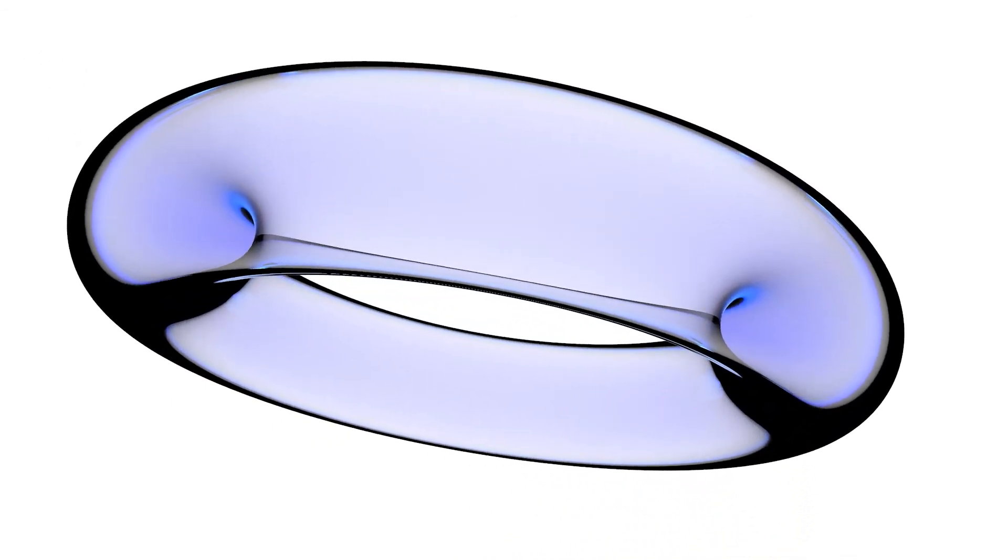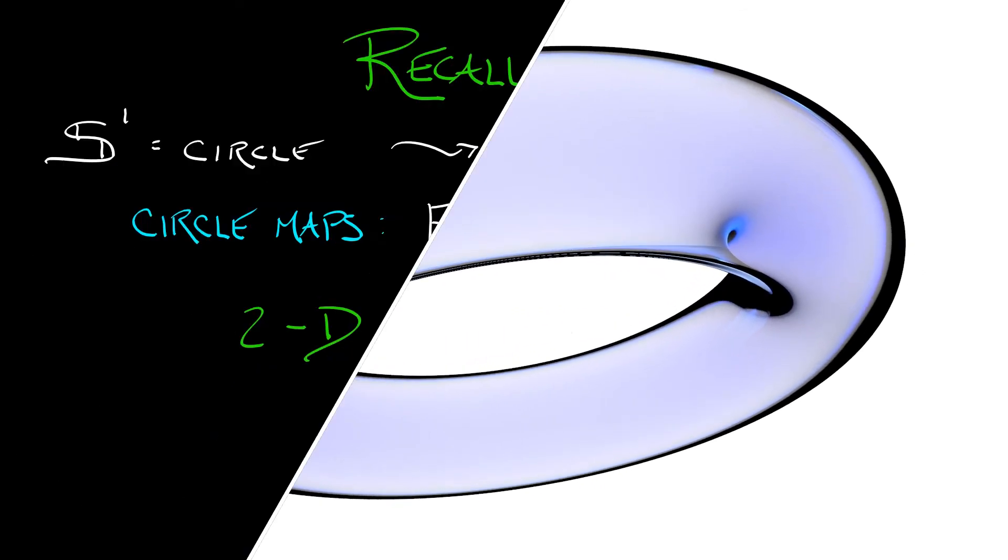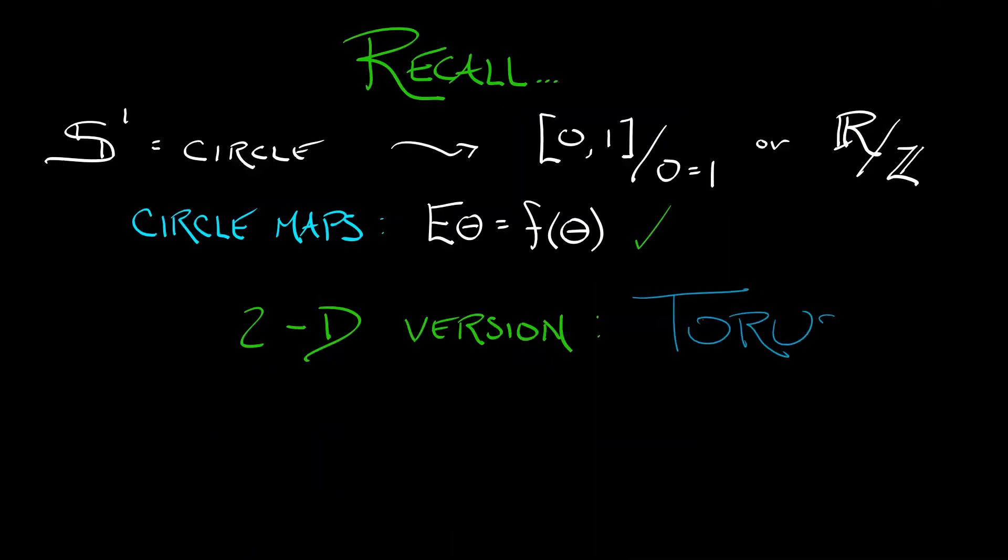Now mathematically, what a torus is, well, it can, just like a circle, be thought of as a space obtained by gluing or by quotienting. So for a two-dimensional torus, what you can do is take a square and identify the left and the right hand sides, and then identify the top and the bottom sides of that square.